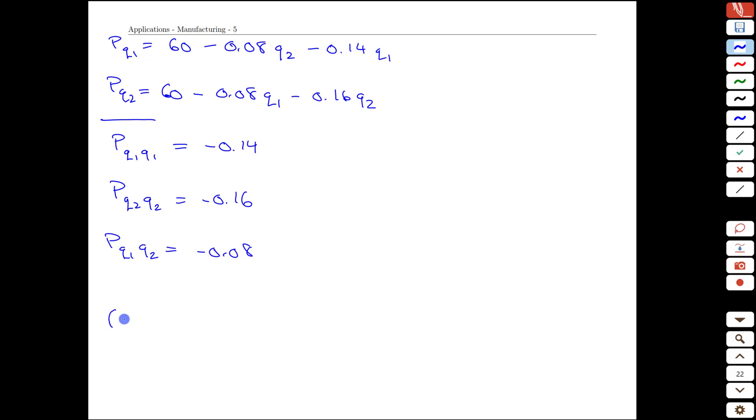We then look at our point, which was q1 is 300, q2 is 225. That doesn't really matter because all of the partial derivatives are constants anyway. 0.14, q2 q2 is negative 0.16, q1 q2 is 0.08.